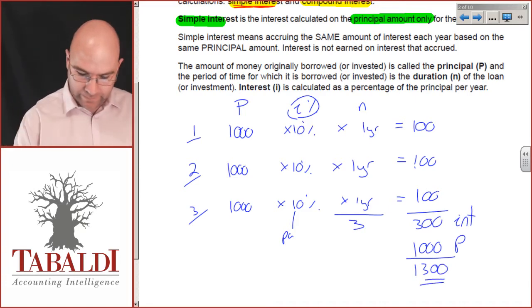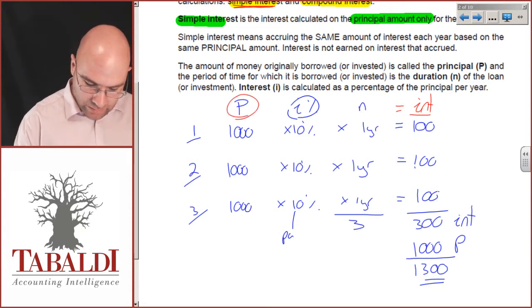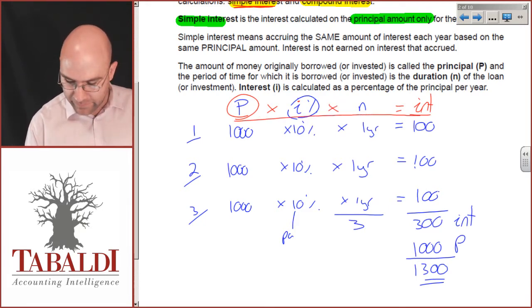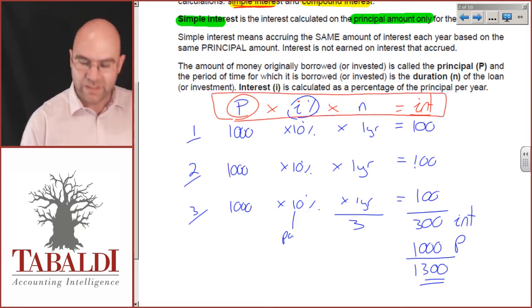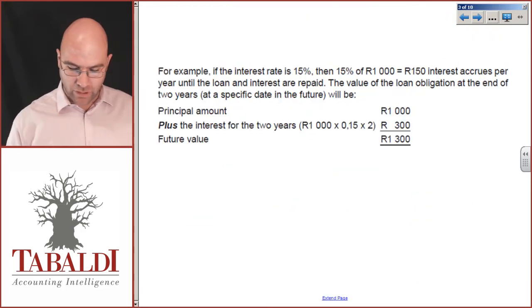So, we've got a formula here. And the formula is, for interest, the interest is equal to principal times the interest rate percentage times the number of periods. That is our formula for simple interest. Let's do an example quickly now.